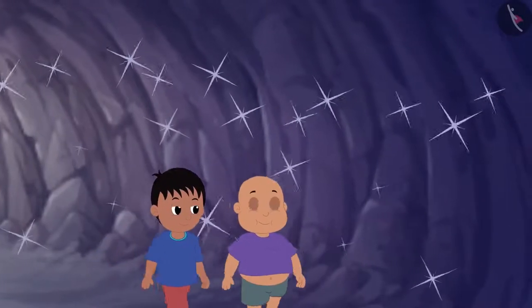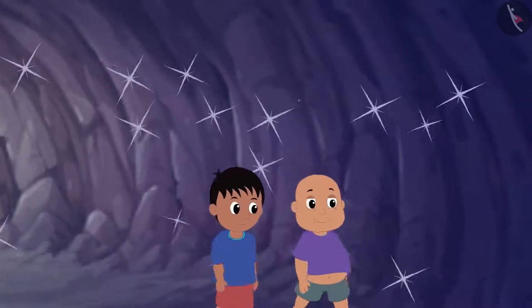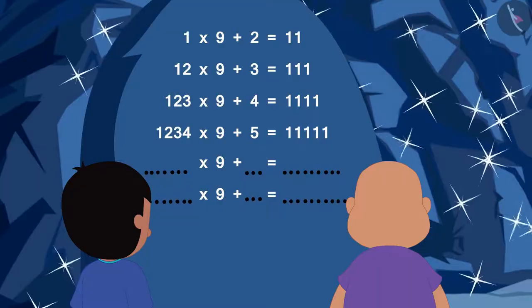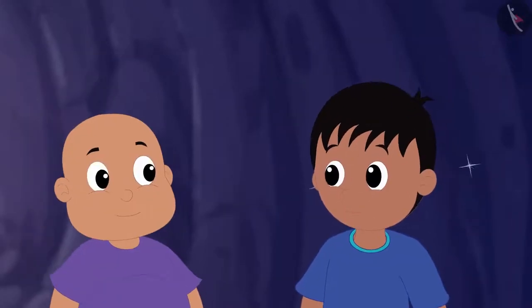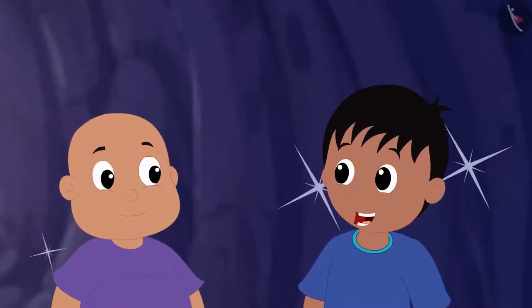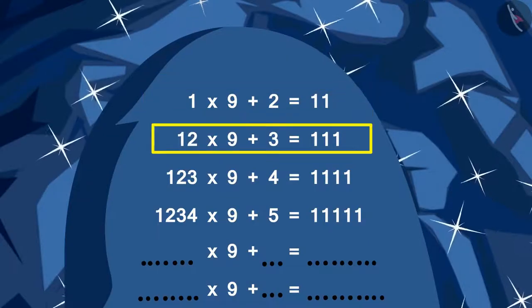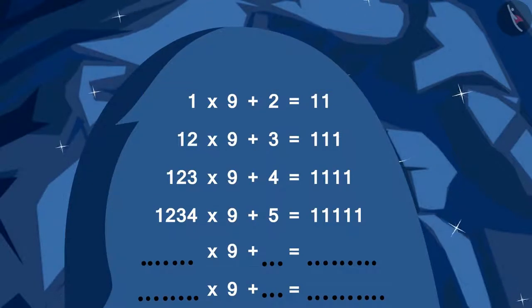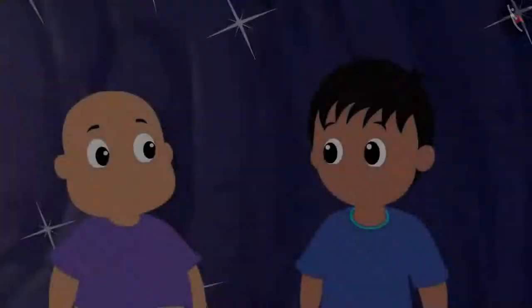Raju and Bablu went further inside the cave. Then, they saw a door there. Bablu, this door has closed the path ahead of the cave. And there are some multiplications written on this door. And then, there are some blank spaces at the bottom. Raju told Bablu.